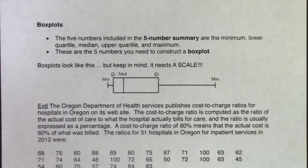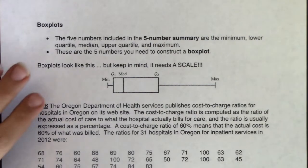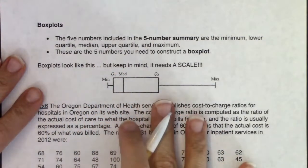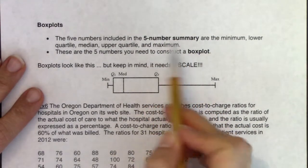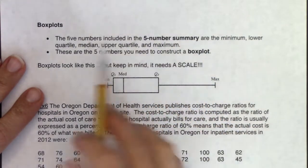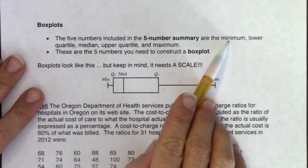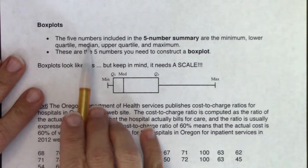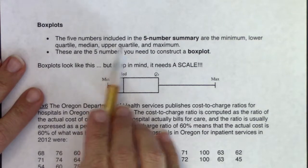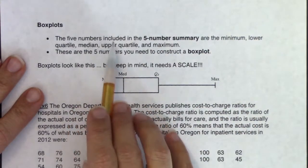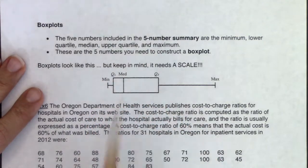We are finally going to get to box plots — these are probably my favorite plot to make, or the plot I make the most often. To create a box plot, you need five numbers, and we call those five numbers the five-number summary. The five numbers included are: the minimum, the lower quartile (Q1), the median, the upper quartile (Q3), and the maximum.